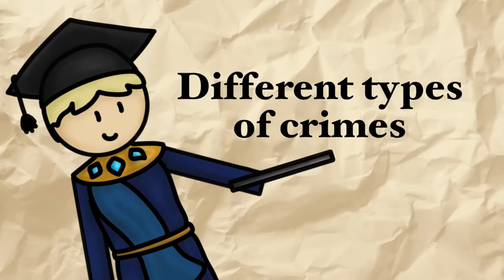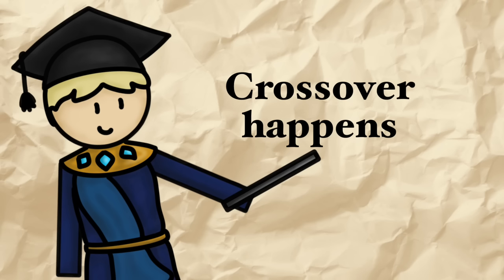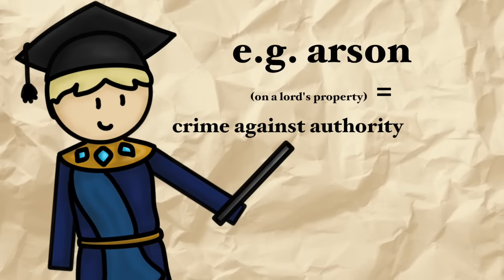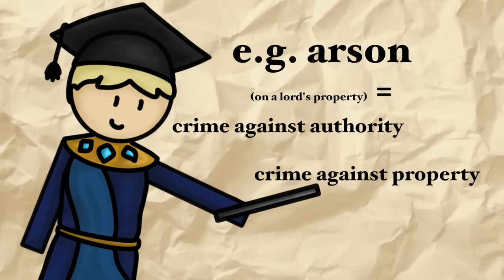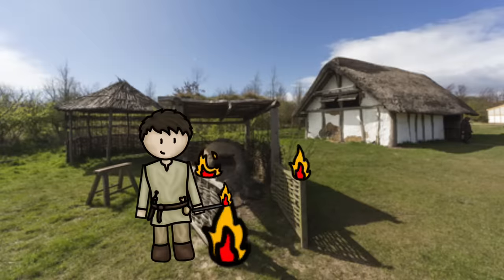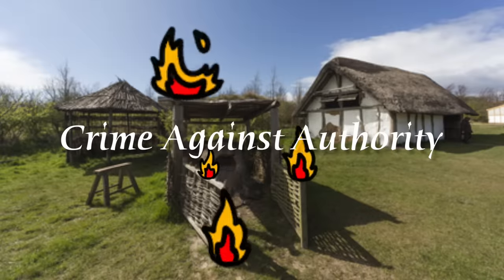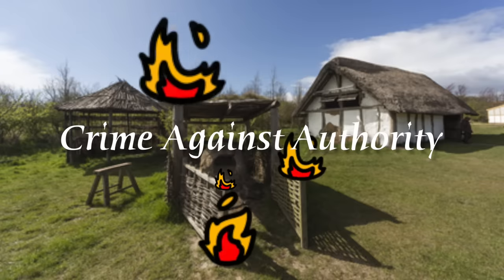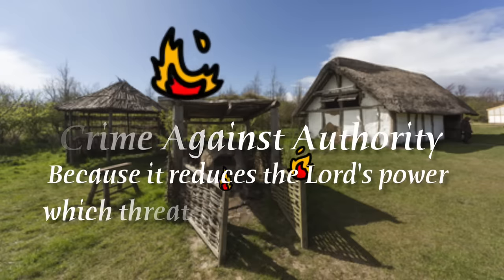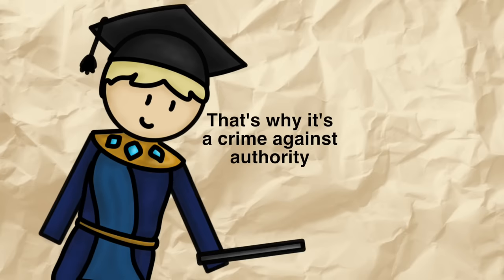Let's look at some different types of crimes. It's important to note that there can be some crossover — a crime could be both a crime against authority and a crime against property, for instance. Crimes against authority are crimes which threaten the social structure of a society. If a peasant deliberately started a fire on his lord's land, this would be a crime against authority, as the lord's crops and buildings could be burnt down, which would reduce the lord's power and thus threaten the social structure.